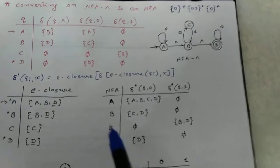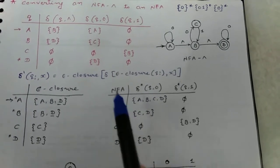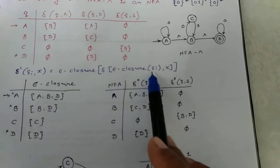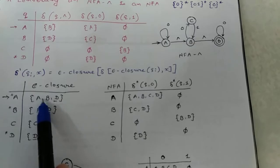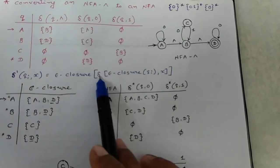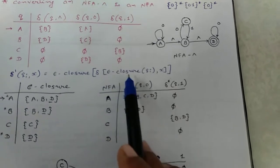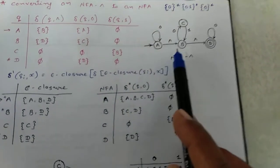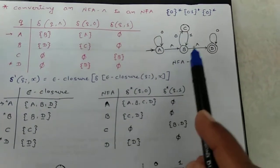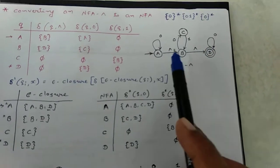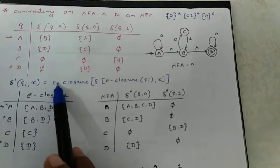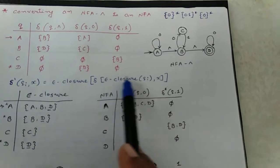First for the NFA, find the transition function. Transition function: epsilon closure of A on input 0. Epsilon closure of A means {A, B, D}. So compute transition function of {A, B, D} on 0: A→0 gives A; B→0 gives C and D; D→0 gives D. So the resulting states are {A, B, D}.